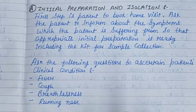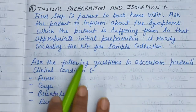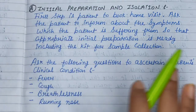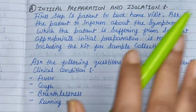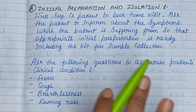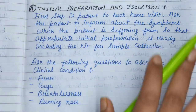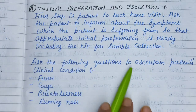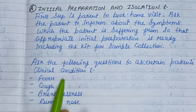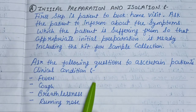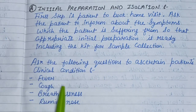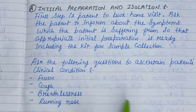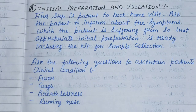At the time of home visit, you will take a full history of the patient - whether they have any disease or symptoms suggesting COVID. If the patient is suffering from COVID symptoms, you will go with the whole preparation and the whole kit, with all the sample collection equipment. Ask the following questions to assess the patient's clinical condition: Do they have fever or cough? Do they have a problem with breathing? Do they have a running nose?